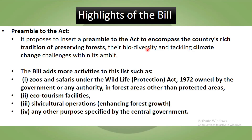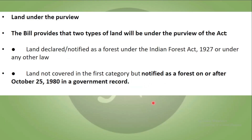The bill also adds more activities to the permitted list, such as zoos and safaris under the Wildlife Protection Act of 1972, which would be owned by the government or any authority in forest areas other than protected areas. Ecotourism facilities will be expanded. There are also silvicultural operations, meaning enhancing forest growth, and any other purpose specified by the central government. Regarding land under purview, the bill provides two types of land under the act: first, land declared or notified as forest under the Indian Forest Act of 1927 or under any other law; second, land not covered in the first category but notified as forest on or after October 25, 1980 in a government record.